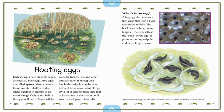Floating eggs. Each spring, a new life cycle begins as frogs lay their eggs. Frog eggs are called spawn. Most spawn is found in calm, shallow water. It sticks together in clumps of up to 4,000 eggs. Only about half of the eggs will hatch — many will be eaten by turtles, fish, and other animals.